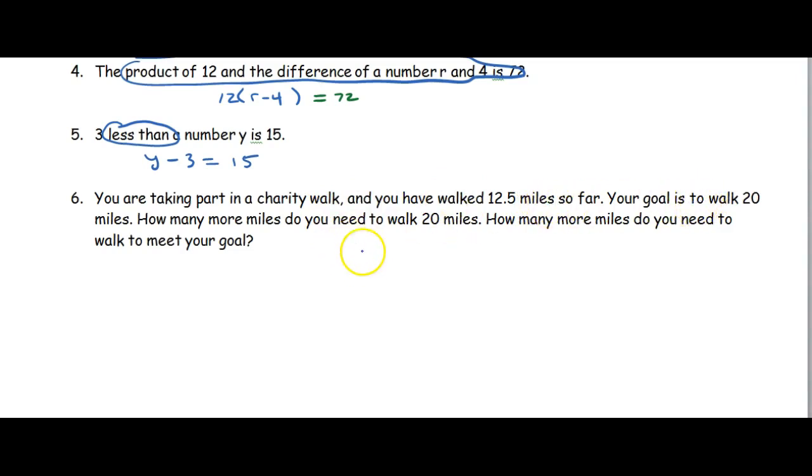So we're going to say, the number of miles you need to walk, m, plus the number of miles you already walked. When you add them together, it has to equal the total number of miles you walk, or want to walk, which is 20.